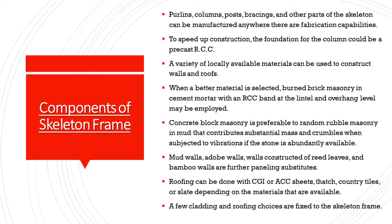When a better material is selected, burned brick masonry and cement mortar with an RCC band at the lintel and overhang level may be employed. Concrete block masonry is preferable to random rubble masonry in mud, which contributes substantial mass and crumbles when subjected to vibrations. If stone is abundantly available, mud walls, adobe walls, walls constructed of reeds, and bamboo walls are further paneling substitutes. Roofing can be done with CGI or ACC sheets, thatch, country tiles, or slate, depending on available materials. A few cladding and roofing choices are fixed to the skeleton frame.